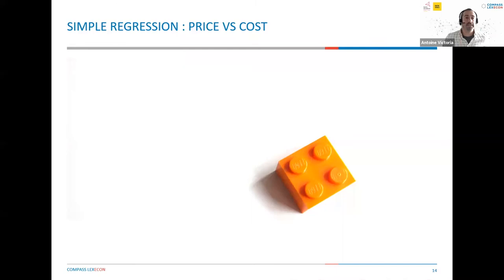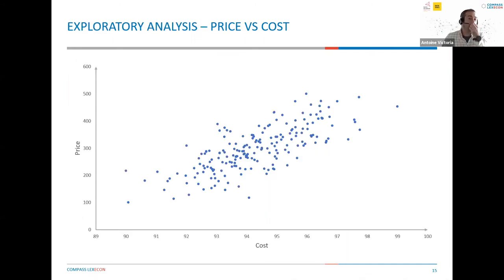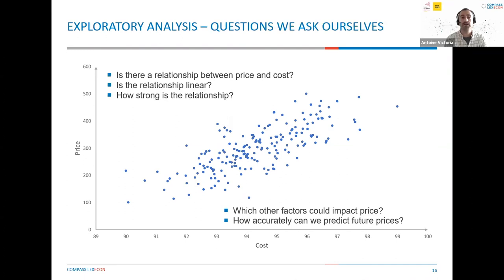Let's start with a simple regression that only tries to estimate the effect of costs on price — this is a simple example, not what we do in practice. The first step, as in all data science or quantitative projects, is to start with an exploratory analysis, because the model is only as good as the input data. This is quite time-consuming and is a key step in all our projects. We need to run that exploratory analysis and try to understand the relationship between price and cost, as you can see here on this scatter plot.